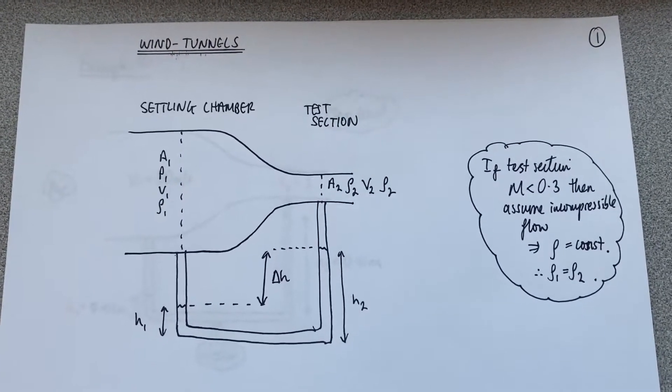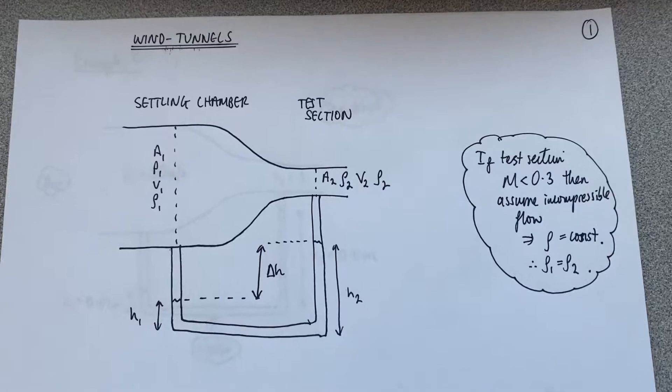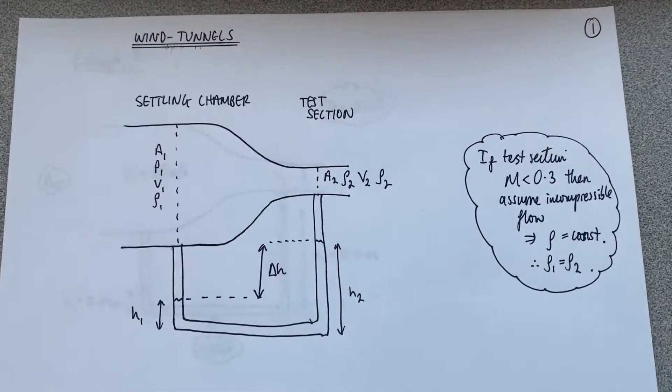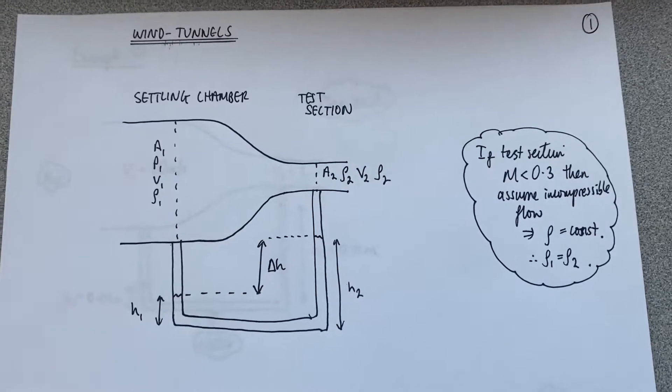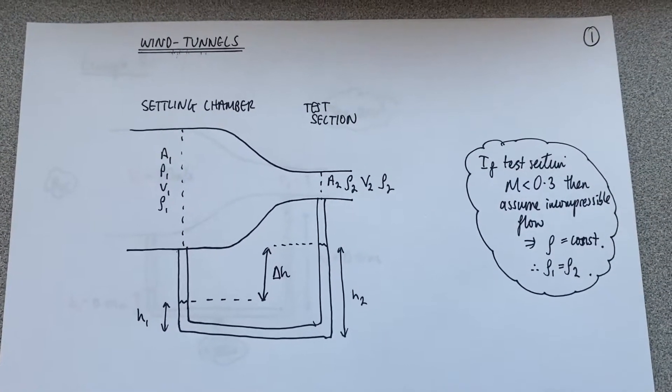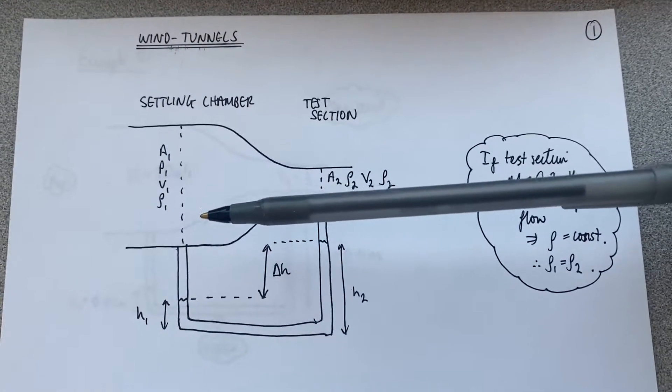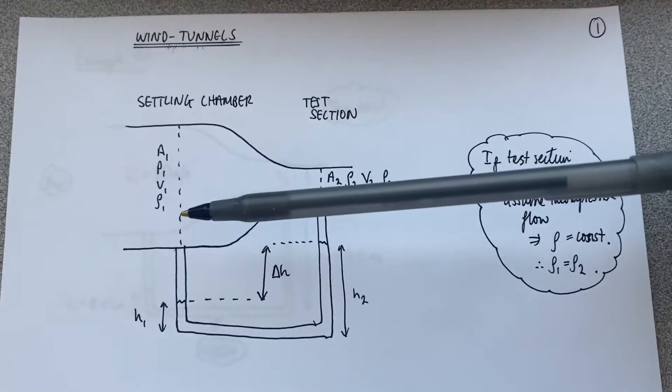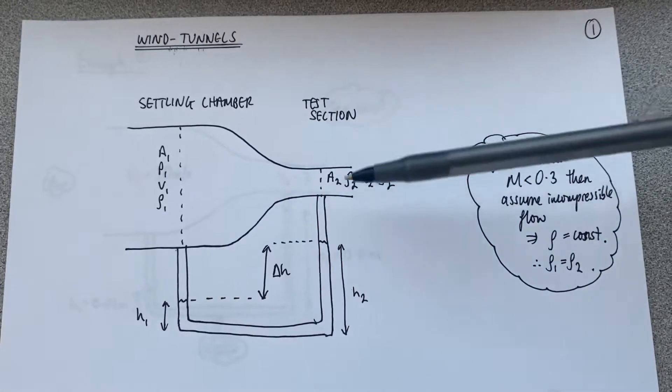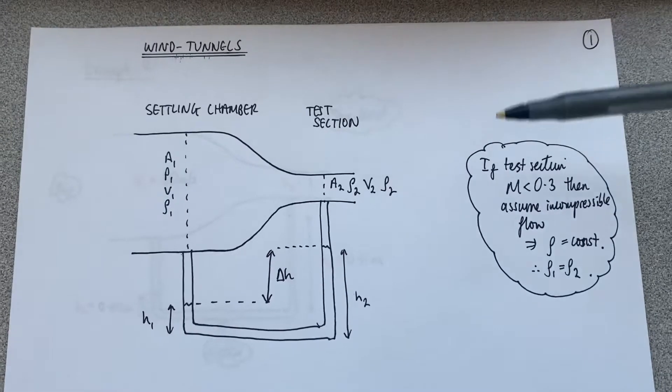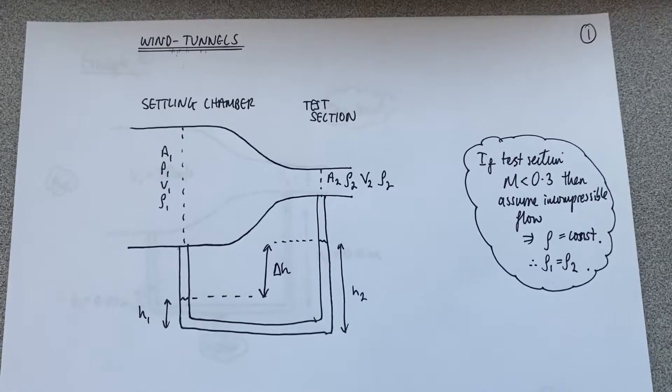All right, so here's some more information regarding wind tunnel sizing and airflow speed measurements. So here's a basic schematic of our wind tunnel. The settling chamber has a larger cross-sectional area than the test section so that we can increase the speed v1 to v2 in the